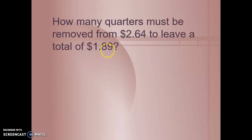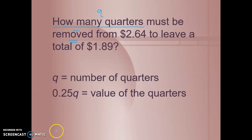How many quarters must be removed from $2.64 to leave a total of $1.89? Well, how many quarters is our unknown? Let's use Q. And it says must be removed. Removed means taken away. So that's subtraction. And it's going to leave us a total of, so that reminds me of an equal sign here, $1.89. We know that quarters have a 25 cent value. So the value of the quarters is 0.25Q. I'm going to take $2.64 and I'm going to remove 25 cents times however many quarters that takes until I get to $1.89. Go ahead and solve that one on your own and we'll see if you come up with the right answer in class.